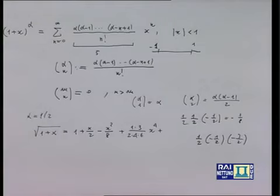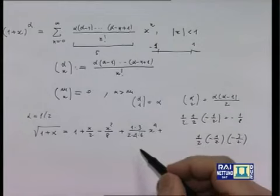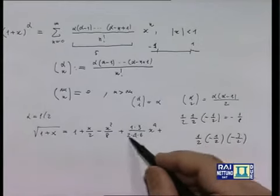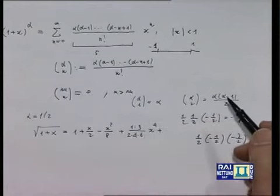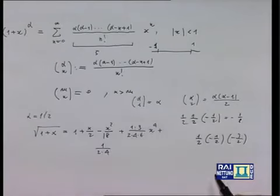Abbiamo un certo modo di scrivere questa serie binomiale che fa intervenire prodotti che assomigliano ai fattoriali, ma non lo sono: il numeratore è il prodotto soltanto di fattori dispari, il denominatore il prodotto di fattori pari. Questi prodotti sono noti in letteratura come semifattoriali.